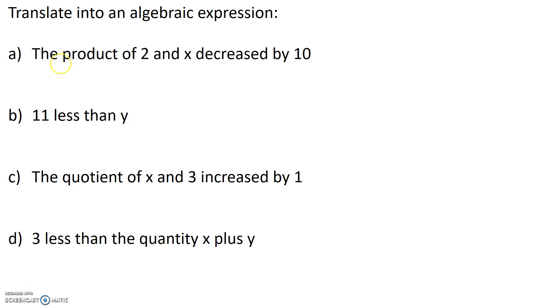Part A: the product, which means multiplication. What is it the product of? It's the product of 2 and x, and that's being decreased by 10. So product means multiplication. What are we multiplying? We're multiplying 2 and x. So the product of 2 and x decreased by 10 is 2x minus 10.